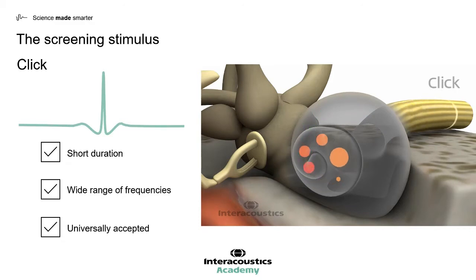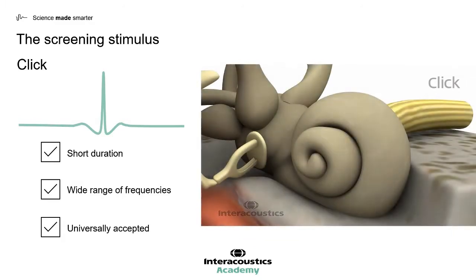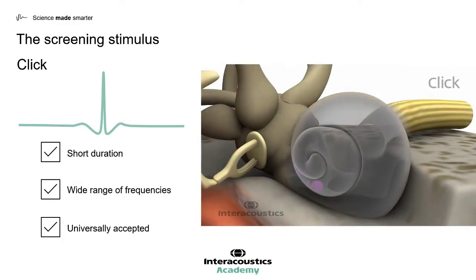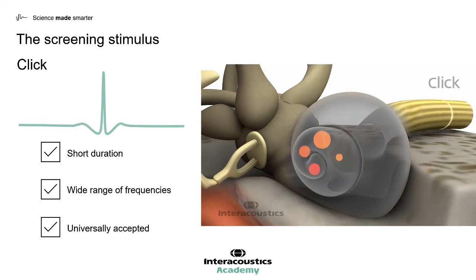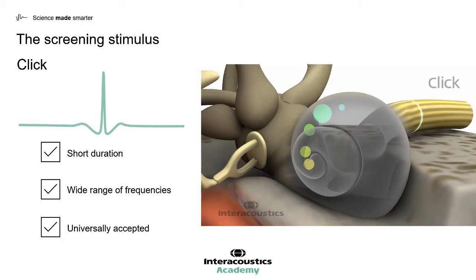The challenge associated with the click stimulus, just like in traditional ABR testing, can be displayed in the video shown on the right-hand side of the screen. Although the stimulus presents all frequencies to the cochlea at the same time, the way the cochlea is organized — from high frequency to low frequency — means that the firing of the nerve happens at different times for different frequencies. This causes a smearing of the response, and therefore lower response amplitudes on the ABR itself. The result of this is that, in addition to smaller responses, in the screening world, this will lead to longer test times.